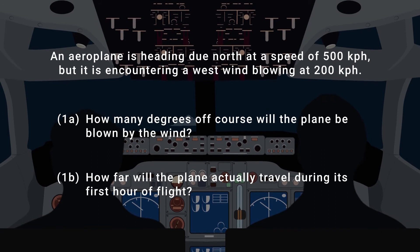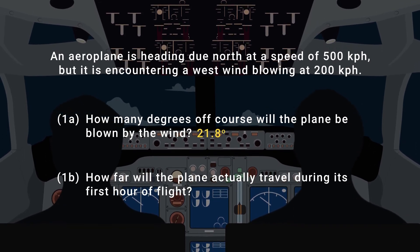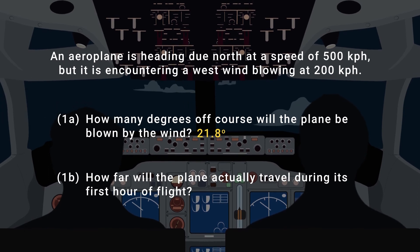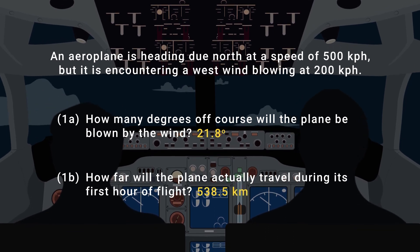If we now return to our questions, we can say that the plane will be blown 21.8 degrees off course, and that instead of travelling 500 kilometers in the first hour due to the effects of the wind, it will actually fly 538.5 kilometers.